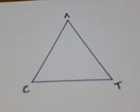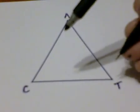To construct the in-center of a triangle, we need to bisect at least two of the angles.